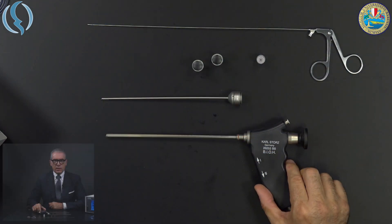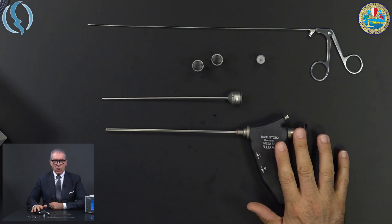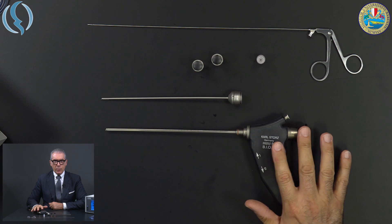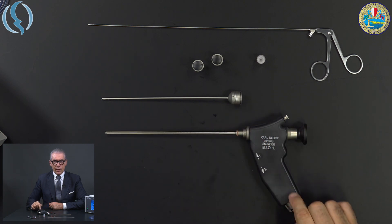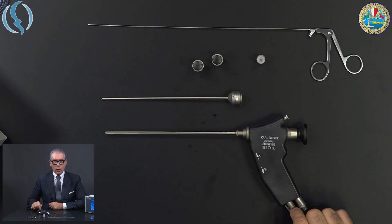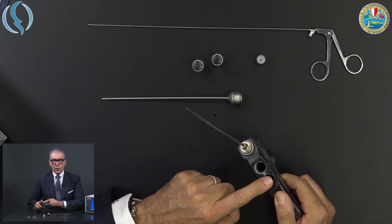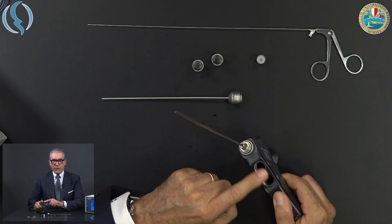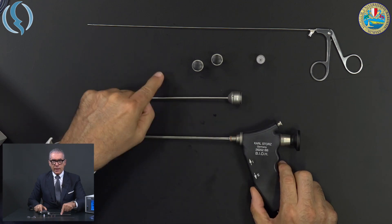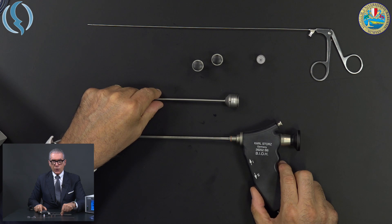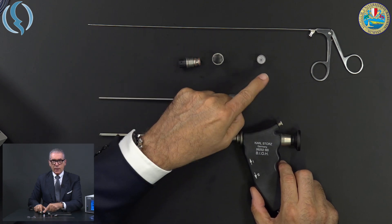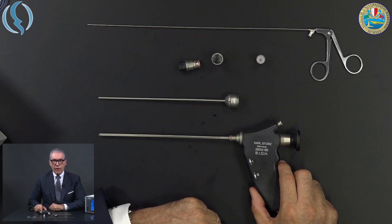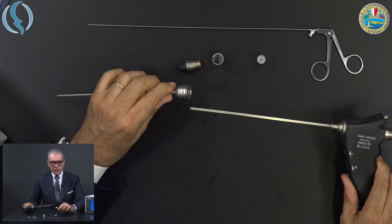This is our scope totally disassembled. You see this is the main body with the handle that includes the optics, the instrument channel that is also the inflow channel, the light cable and the monoblock connector plus the two holes where you will insert the valves. Then the outer sheath, the two valves, the stopcock and one of our instruments. So it's very easy to assemble.